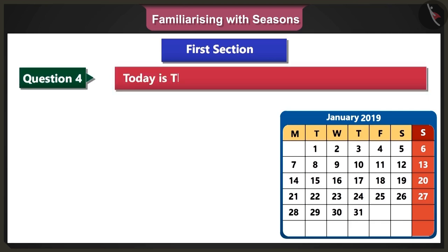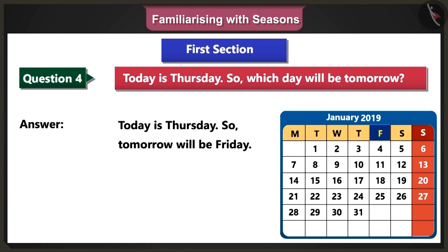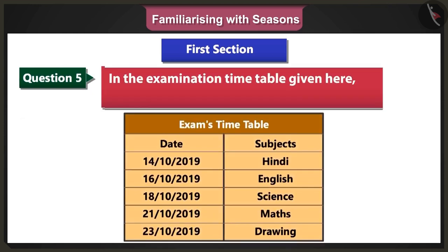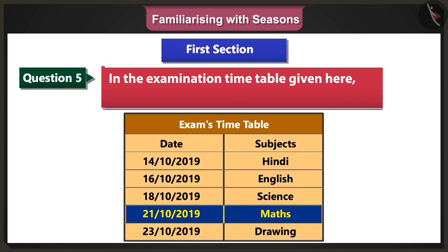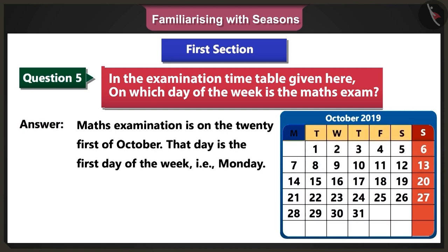Fourth question: Today is Thursday. So tomorrow will be which day of the week? Answer: Today is Thursday, so tomorrow will be Friday. Fifth question: In the examination timetable given here, on which day of the week is the maths exam? Answer: The maths exam is on the 21st of October. That day is the first day of the week, that is Monday.